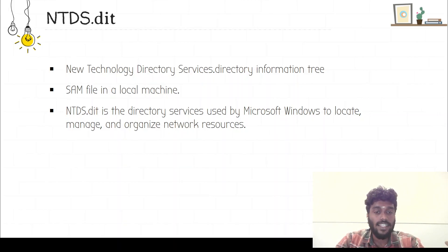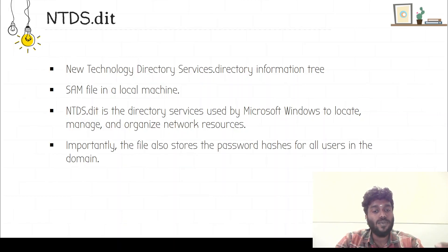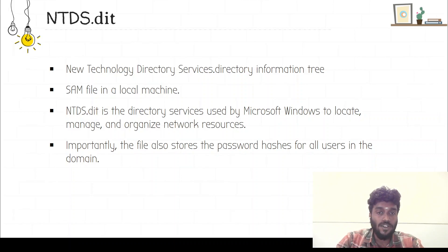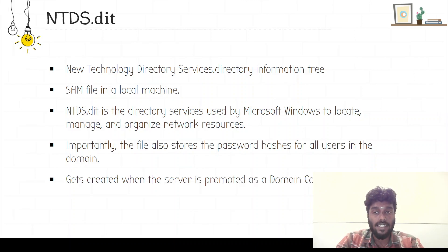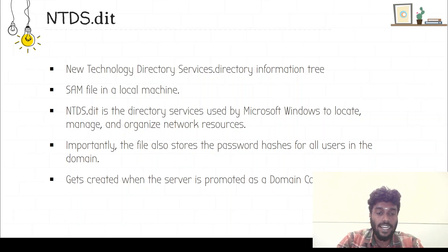The ntds.dit is a database file that stores the Active Directory data. Before we promote the server as a domain controller, all the data are stored in the SAM file. During the DC promotion process, a new database folder along with other folders are created, which is the NTDS folder. During this promotion process, you can choose the location where this folder will be stored. Once the server is promoted as a DC, the data available on the SAM files are transferred to the NTDS file.